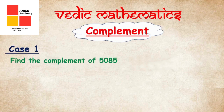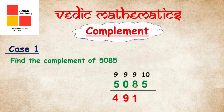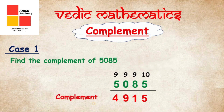Now we have to find the complement of 5085. Remember the formula: All from 9 and last from 10. Starting from the left: we minus 5 from 9 and get 4, we minus 0 from 9 and get 9, we minus 8 from 9 and get 1, and we minus 5 from 10 and get 5. The complement of 5085 is 4915.